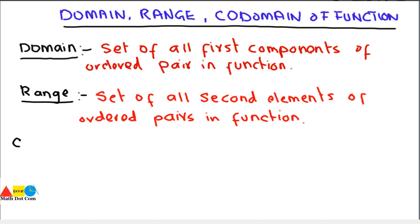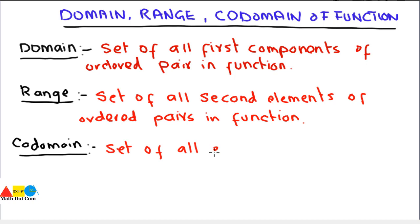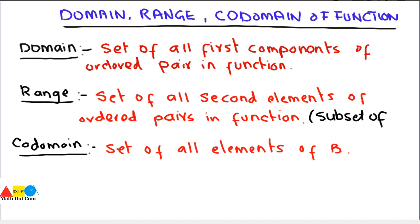Then the co-domain — as most of us get confused about domain and co-domain — let's see how it differentiates. Co-domain is actually the set of all elements of B. Now, how co-domain differentiates from the range: range also refers to elements of B, but range is basically the subset of co-domain.